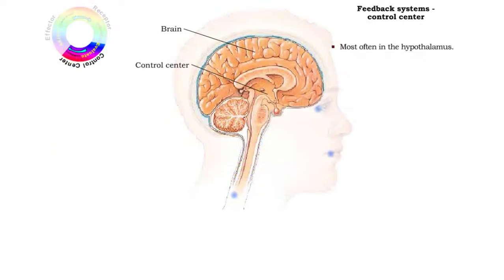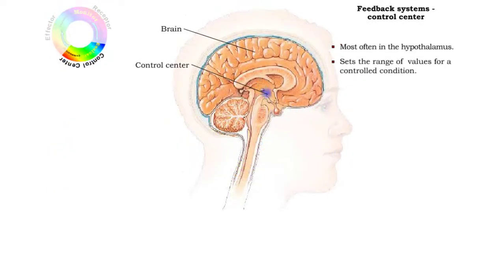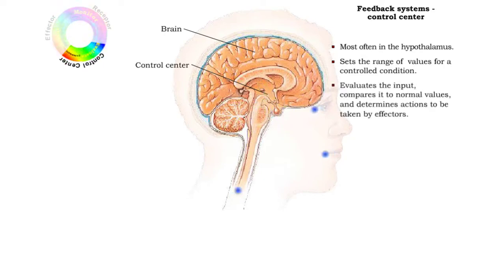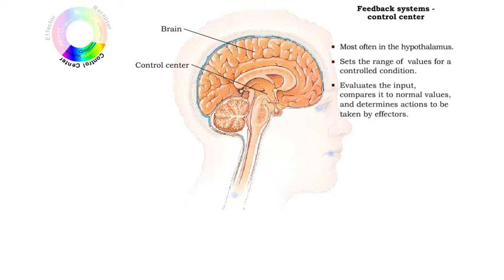The hypothalamus is an important integrating center for both nervous and hormonal regulatory processes. The range of values for a controlled condition, such as body temperature, is set in the control center. The input from receptors is evaluated and compared to norms by the control center.